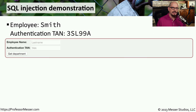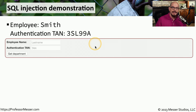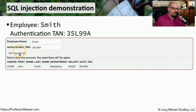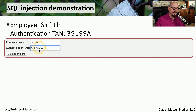Let's look at an example of SQL injection using an application specifically written to be vulnerable — it's part of a series called WebGoat, available at webgoat.org. We have two pieces of information to add: an employee name, which is Smith, and a transaction authentication number, which is something like a password — in this case 3SL99A. Clicking Get Department shows the department information for that query, limited to the name Smith and that specific transaction authentication number. Now let's use SQL injection to view all information inside the database.